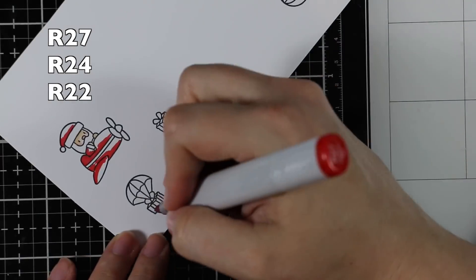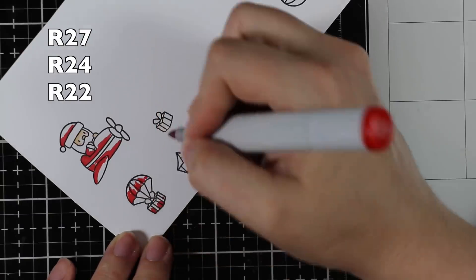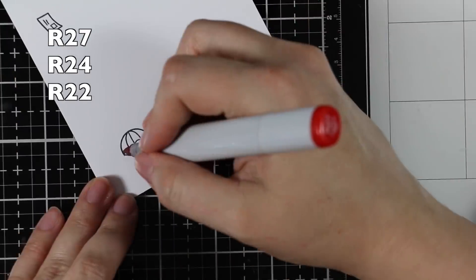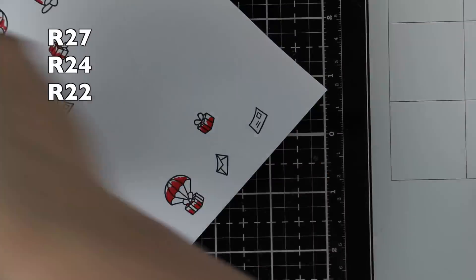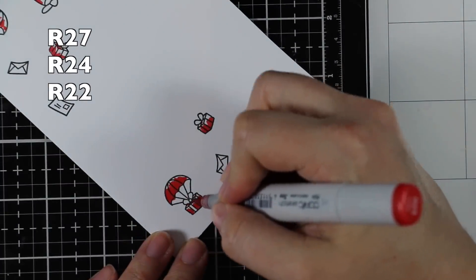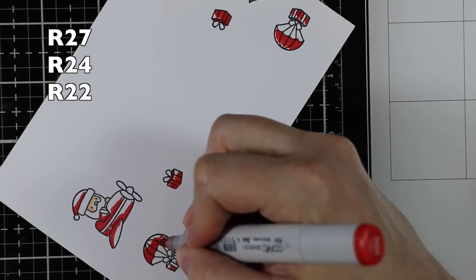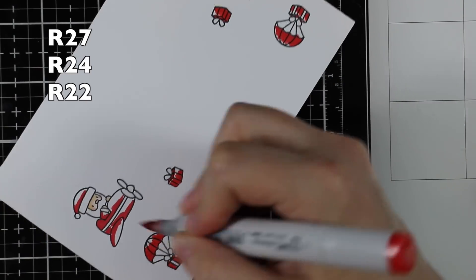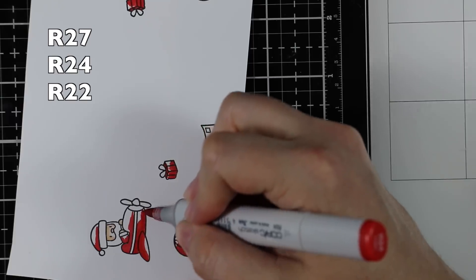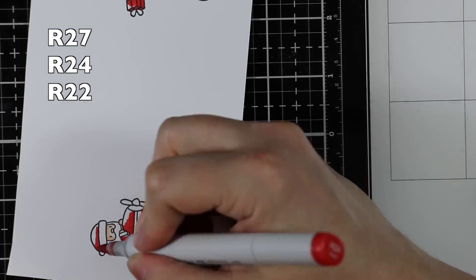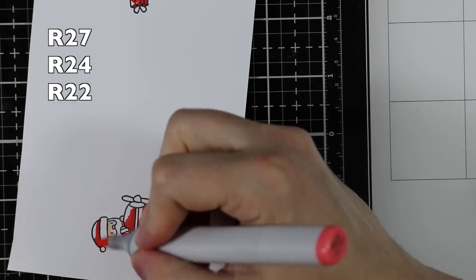I stamped some of the smaller images from the set onto Neenah Classic Crest 80-pound cardstock with Simon's Intense Black ink. I'm doing some very quick and easy Copic coloring because these are small images, so you don't have a whole lot of room for blending and techniques.